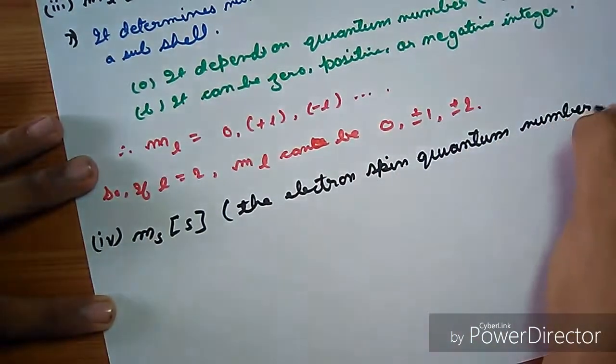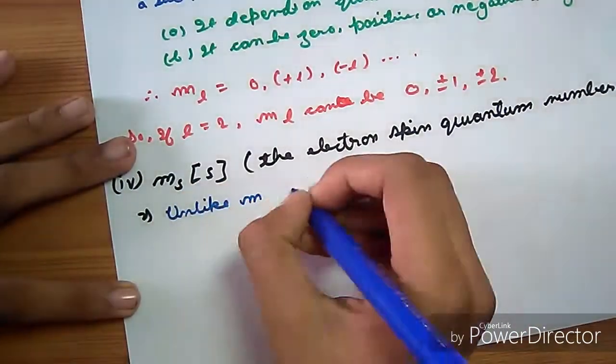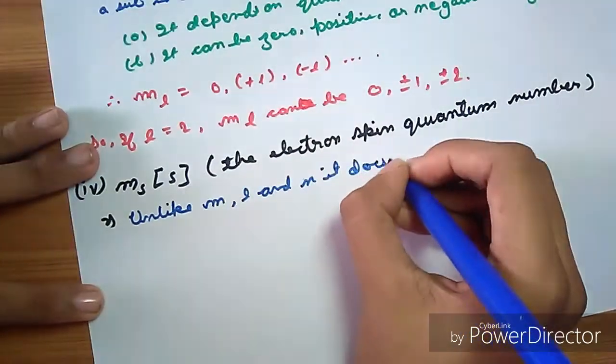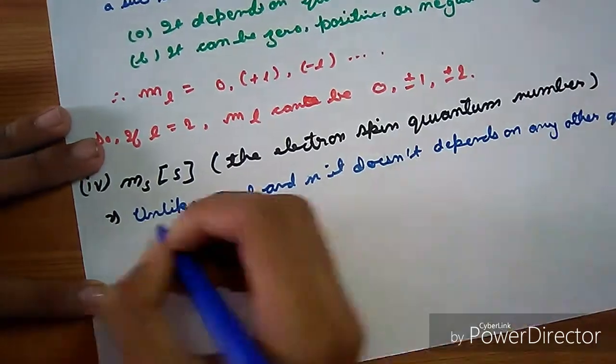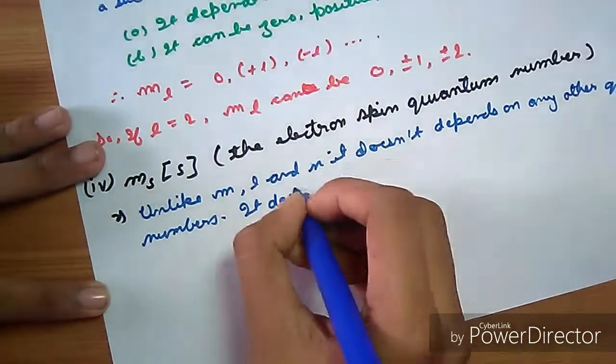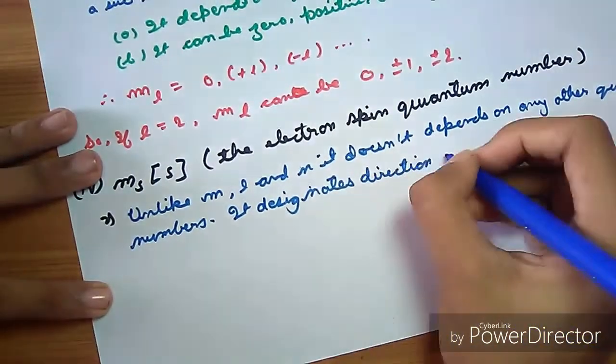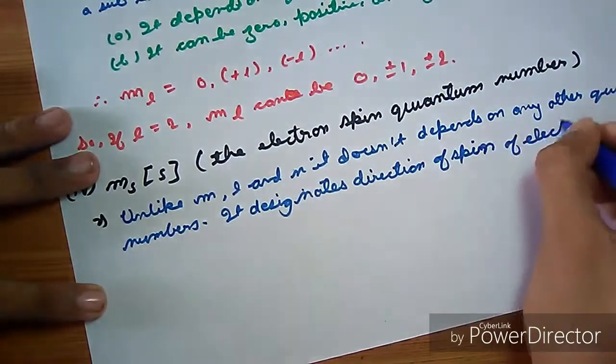Now the fourth and last one is the electron spin quantum number represented by MS or S. Unlike ML and N, it doesn't depend on any other quantum numbers. It designates direction of spin of electrons.